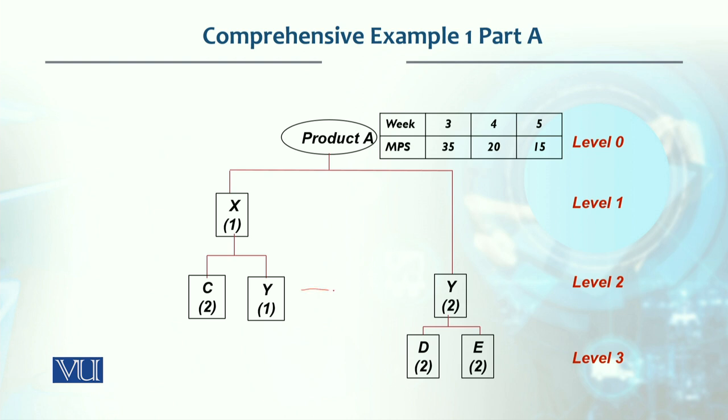At the first level, X is present, so the MRP record for X will be made first. Then Y's record will be made, which will include both the requirement from product A and from X.